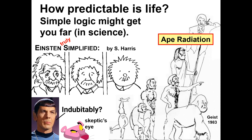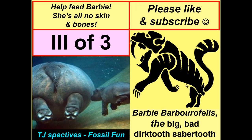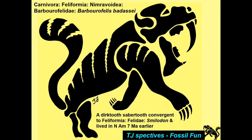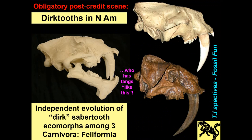You come once again to: how predictable is life? Simple logic might get you far in science — it might not. In real life, I haven't had such good luck. That's the end of part three of three — predicting evolution, the age of mammals and birds. And there's our famous Barbara Ophelis — help feed her, she's all skin and bones. I hope you enjoyed my fossil fun.